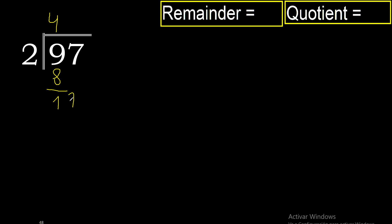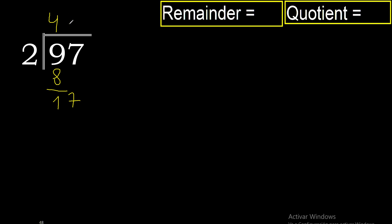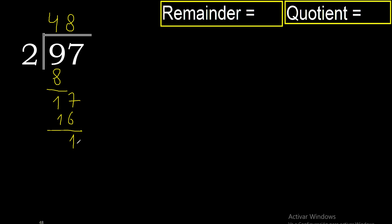Now with 17: 2 multiplied by 9 is 18 — excessive. Multiplied by 8 is 16. 17 minus 16 is 1. There is no number that goes down, therefore finish. The remainder is 1.